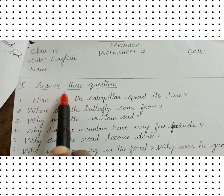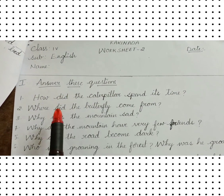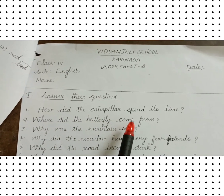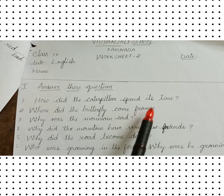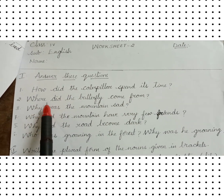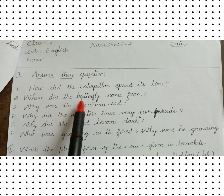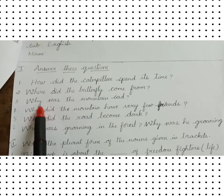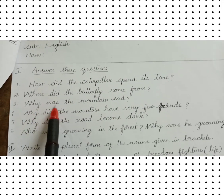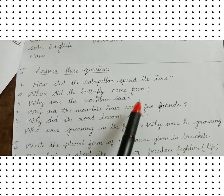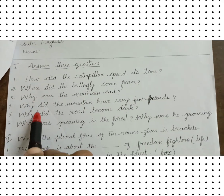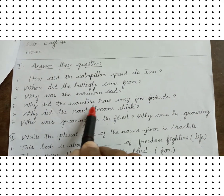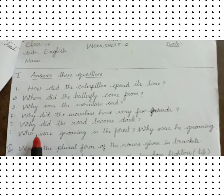Roman 1: Answer these questions. How did the caterpillar spend its time? Second, where did the butterfly come from? Third, why was the mountain sad? Fourth, why did the mountain have very few friends?